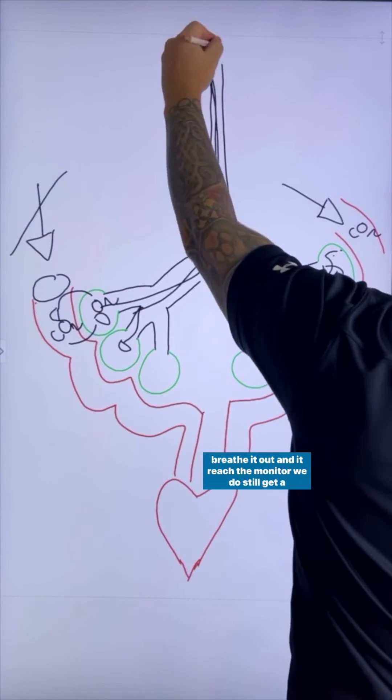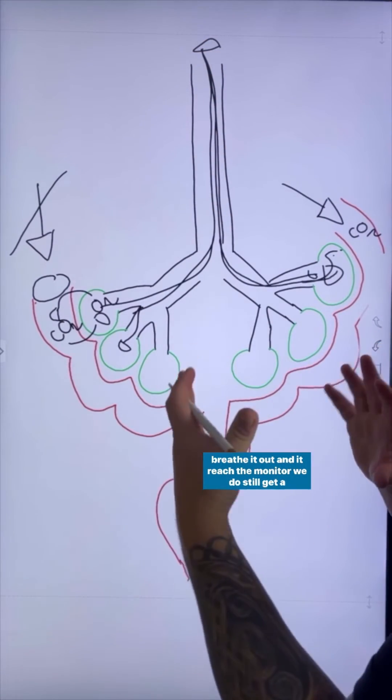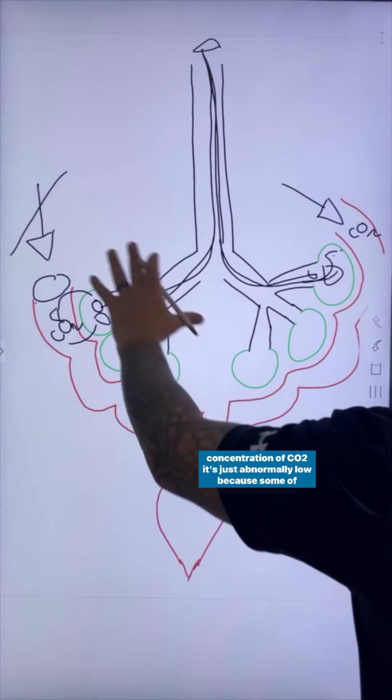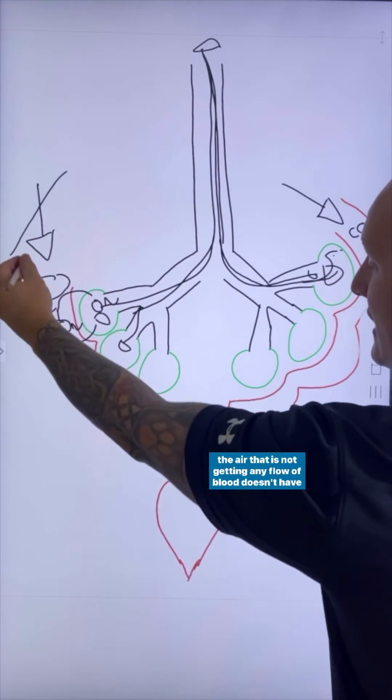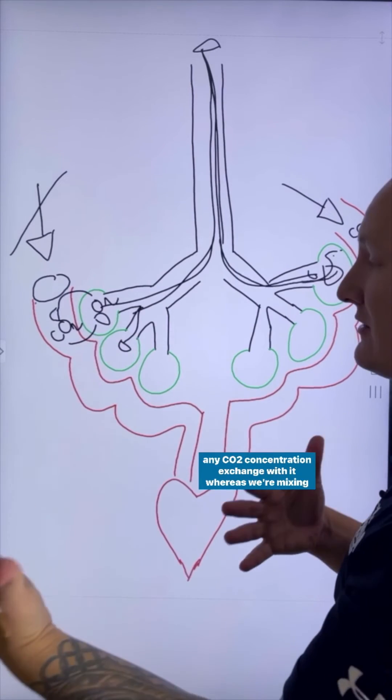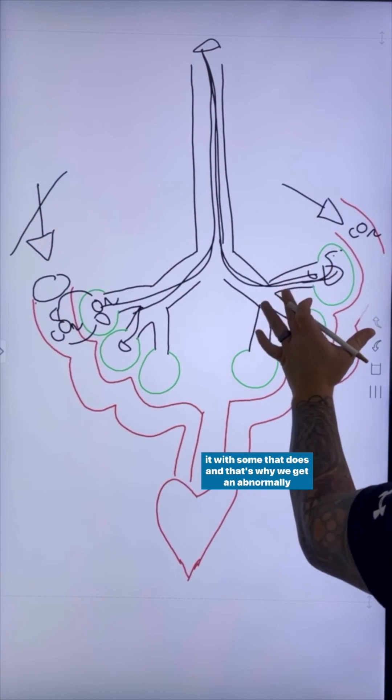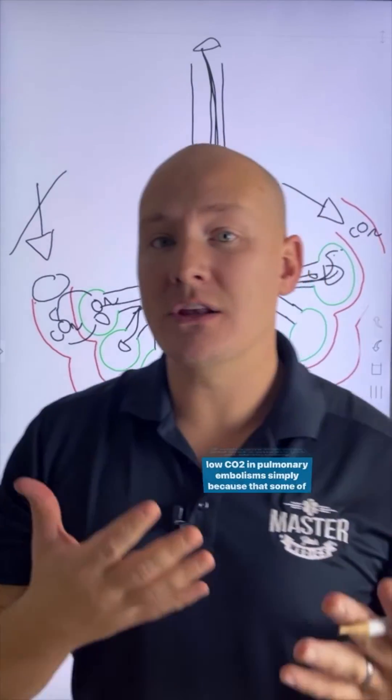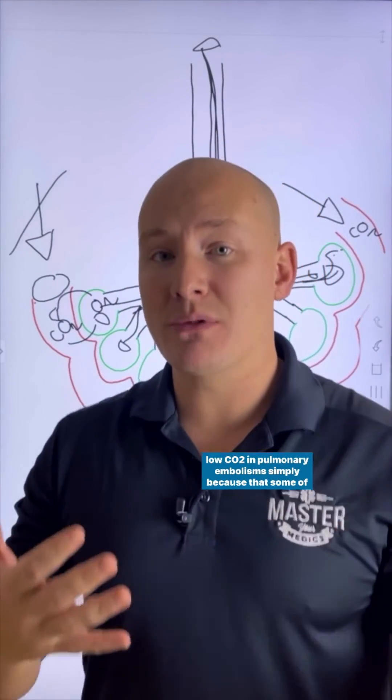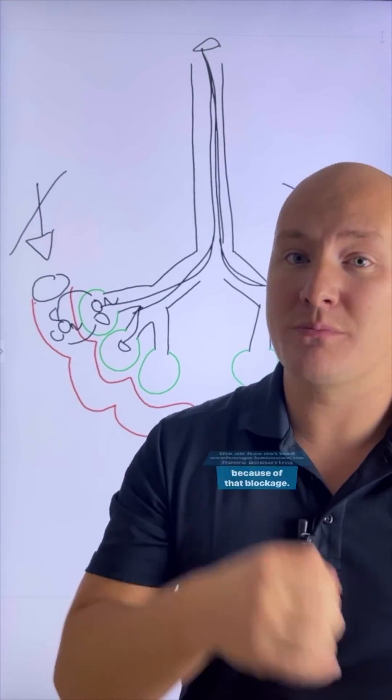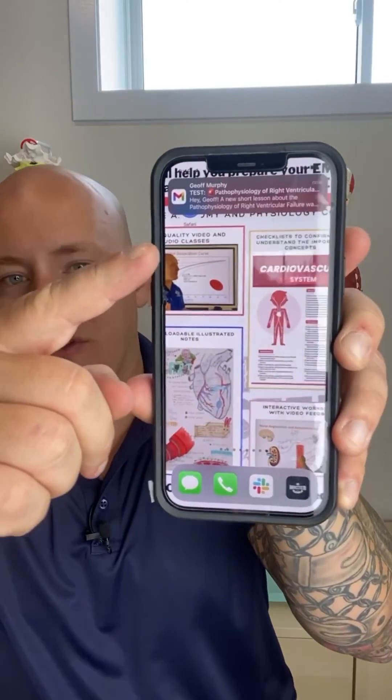And so when we breathe it out and it reads the monitor, we do still get a concentration of CO2. It's just abnormally low because some of the air that is not getting any flow of blood doesn't have any CO2 concentration exchange with it, whereas we're mixing it with some that does. And that's why we get an abnormally low CO2 in pulmonary embolisms, simply because some of the air has not had exchange because no flow is occurring because of that blockage.